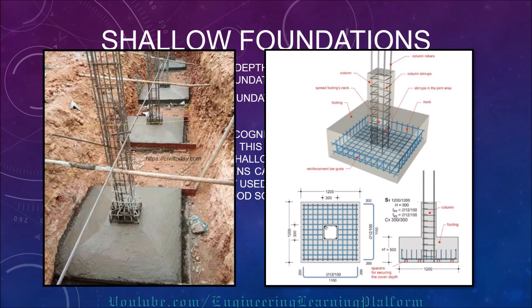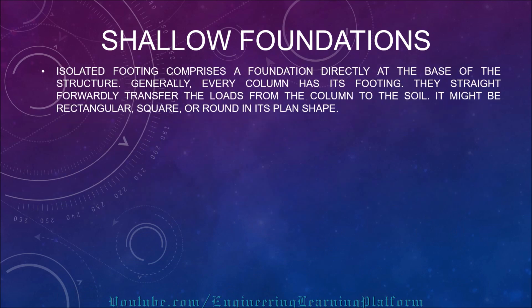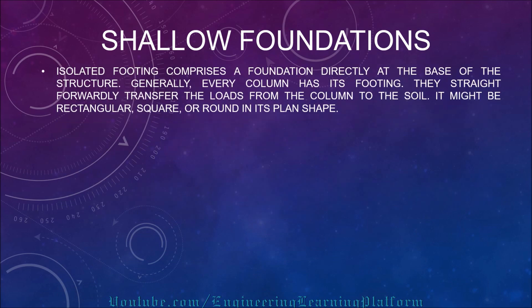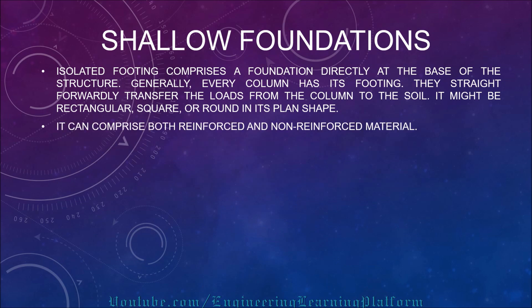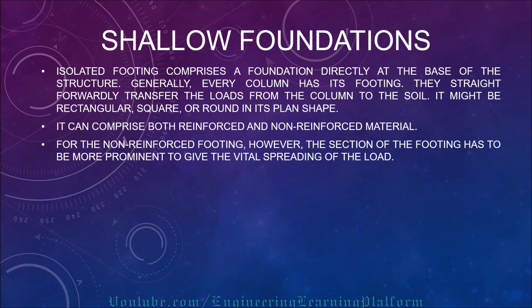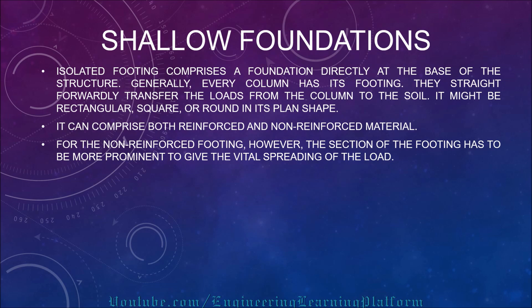One image shows the footing with reinforcement and another shows one cast on site. Isolated footing comprises a foundation directly at the base of the structure. Generally, every column has its own footing for straightforward transfer of loads from the column to the soil. It might be rectangular, square, or round in plan. It can comprise both reinforced concrete and non-reinforced concrete. For non-reinforced footing, the section must be more prominent to provide the vital spreading of load to the soil.